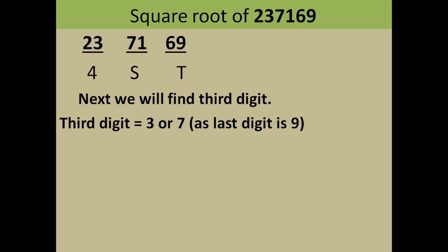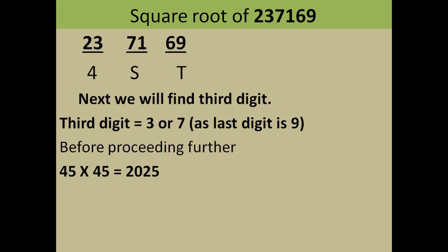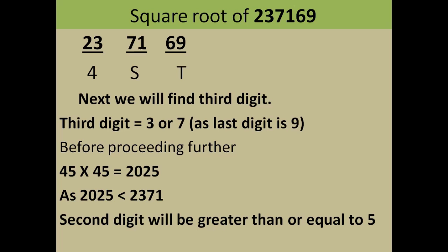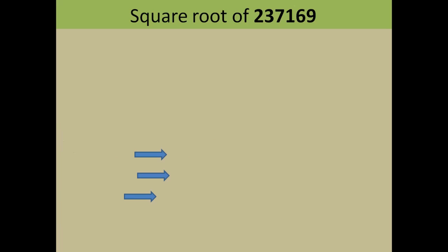Before proceeding further, we will find the square of 45 — because the initial digit is 4, and the square of 45 is 2025. Now the first four digits of 237169 are greater than 2025, which is the square of 45. So the second digit will be greater than or equal to 5. If the square had been smaller, the second digit would have been less than 5, but since the square of 45 is smaller than the first four digits of 237169, the second digit is greater than or equal to 5.